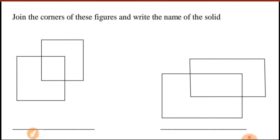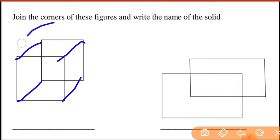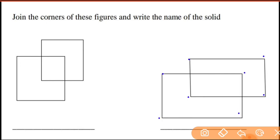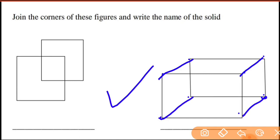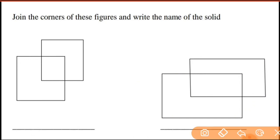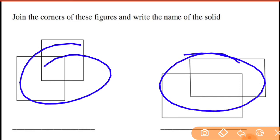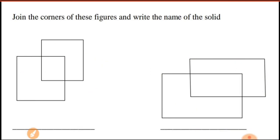Join corners one, two, three, and four like this — see the magic! When you join the corners of the two squares you will see a cube — a 3D shape. Again with the two rectangles, join all four corners of each rectangle. What you will get is a lovely cuboid!